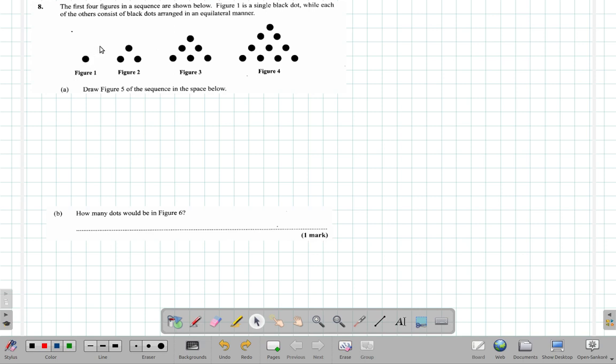Figure 1, 1 dot. Figure 2, 1, 2 dots. Figure 3, 1, 2, 3. Figure 4, 1 dot, 2, 3, 4 dots. So I expect figure 5 to be 1, 2, 3, 4, 5. So we see what the next figure would possibly be. It must be 1, 2, 3, 4, 5.